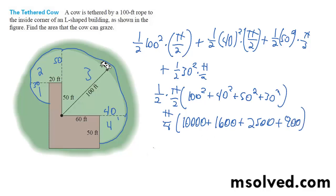And ultimately we're left with 11,780.97, or roughly 11,781 feet squared that the cow can graze.